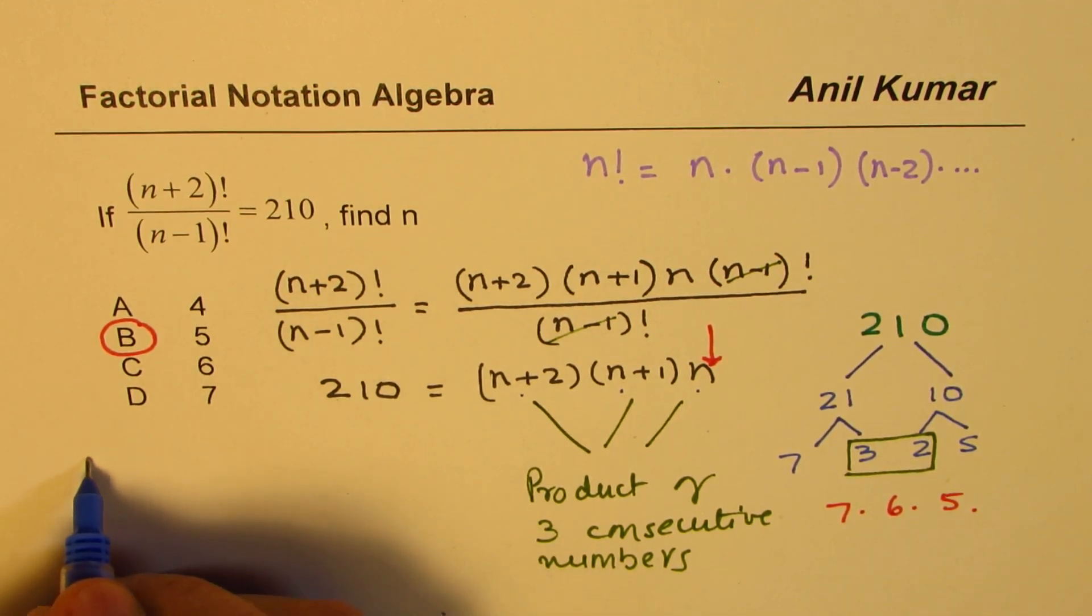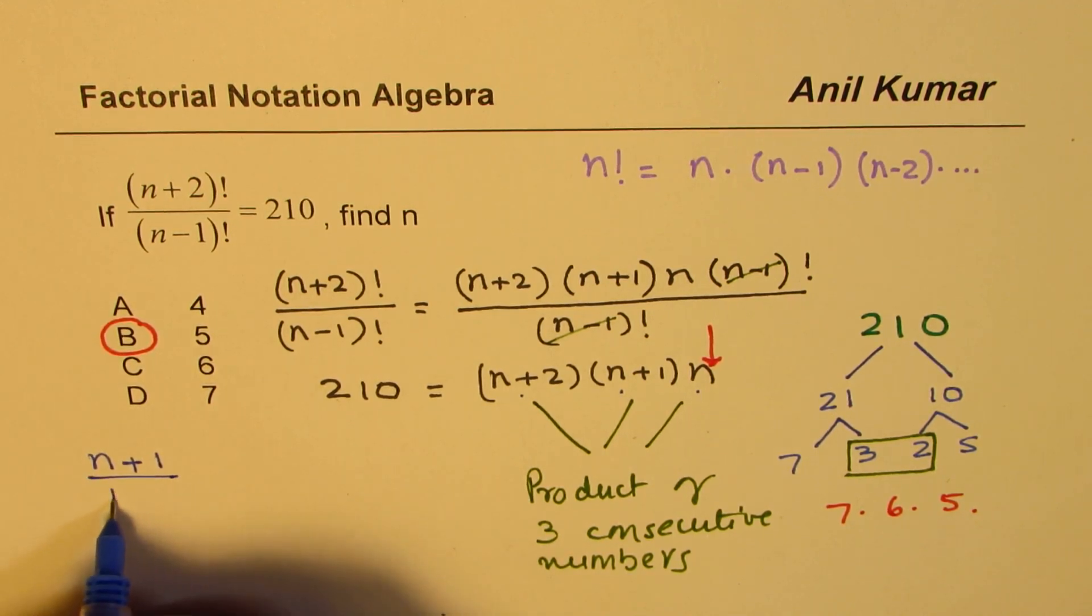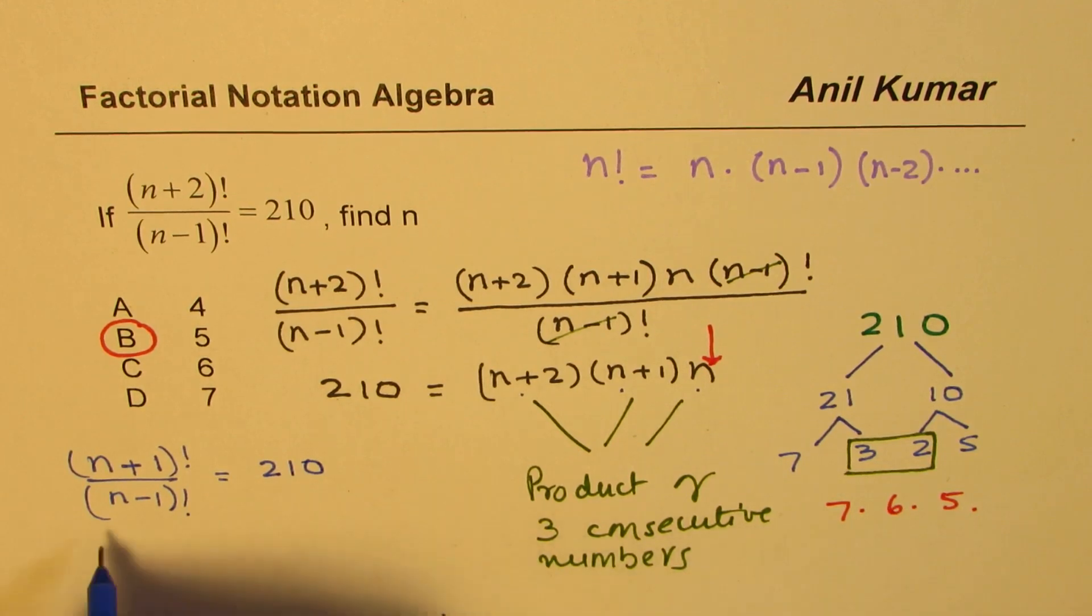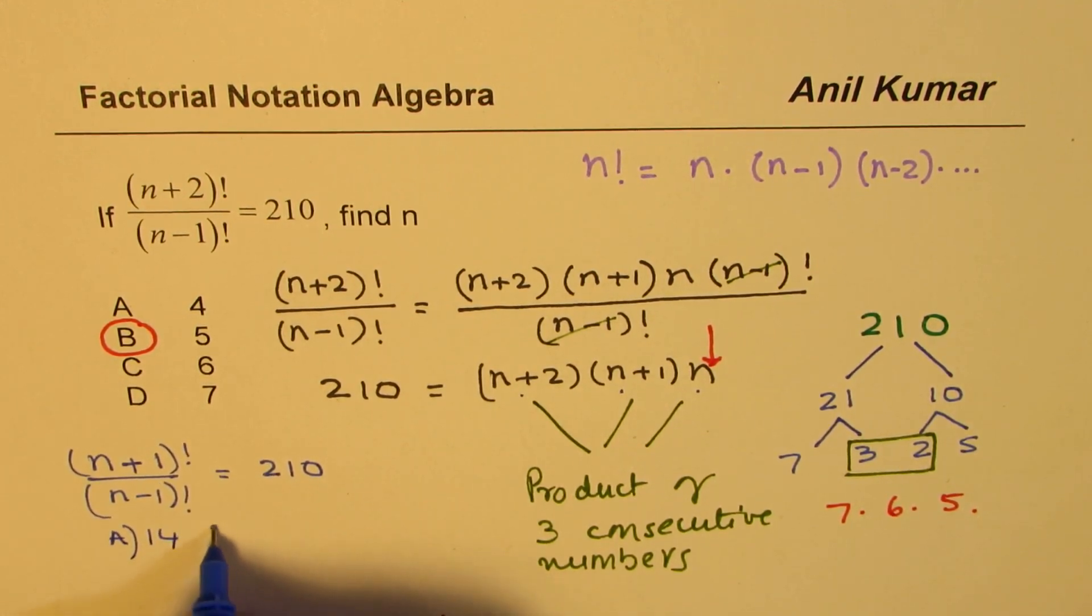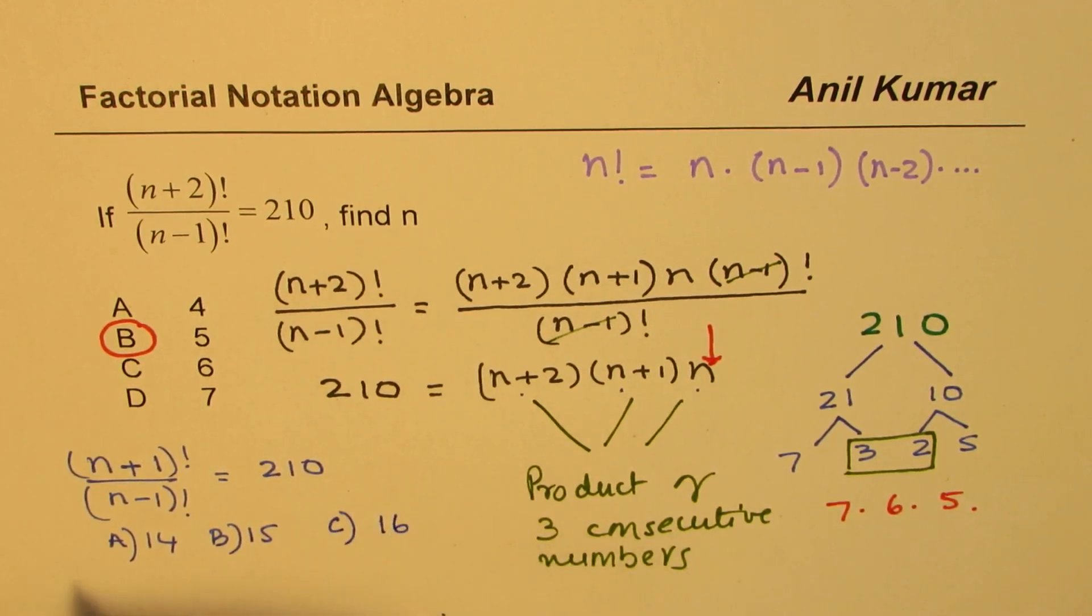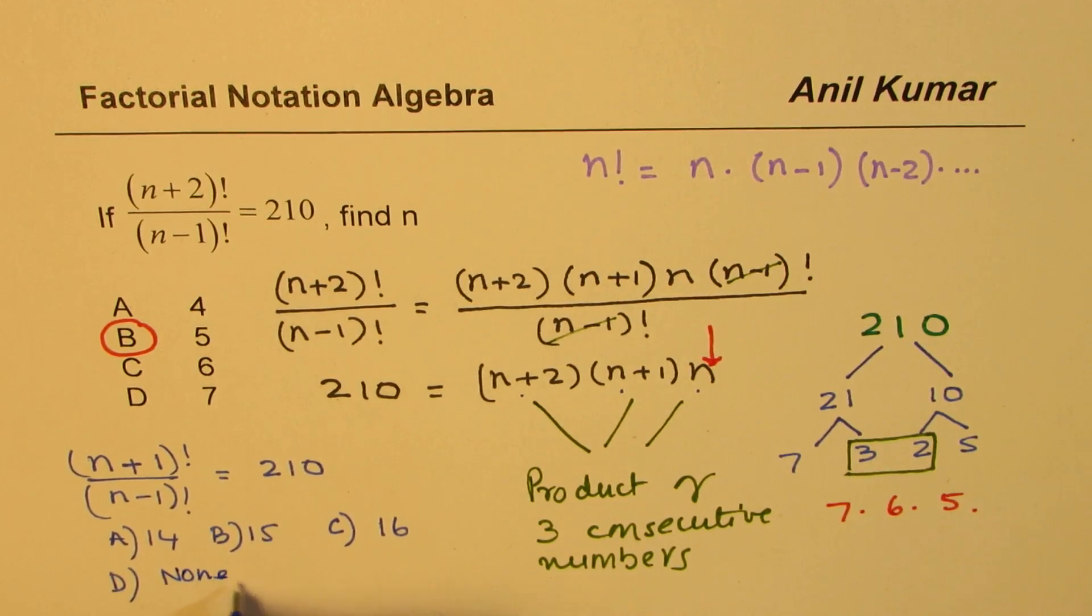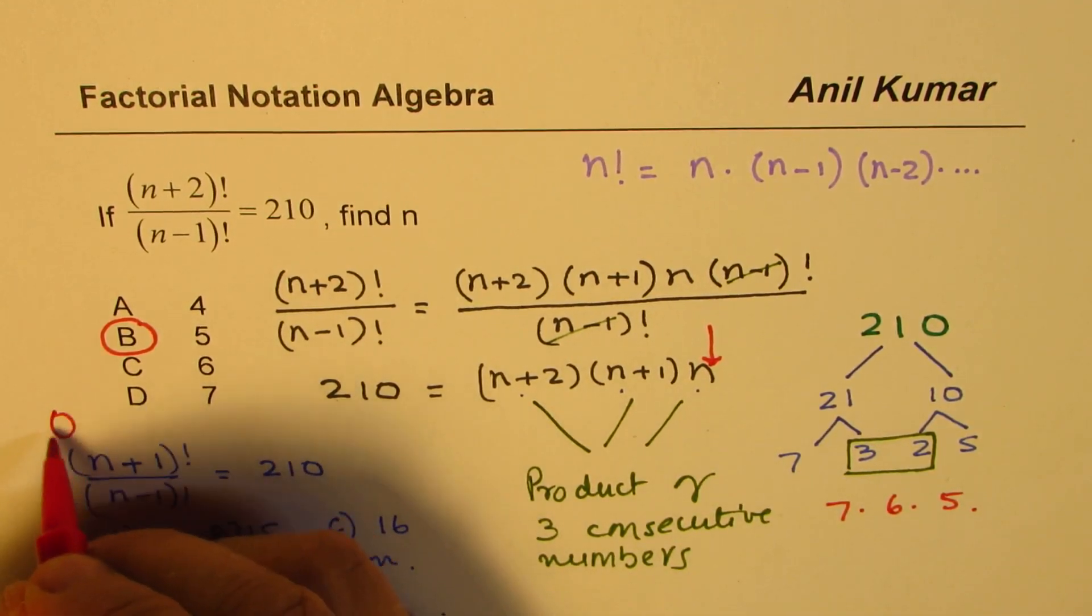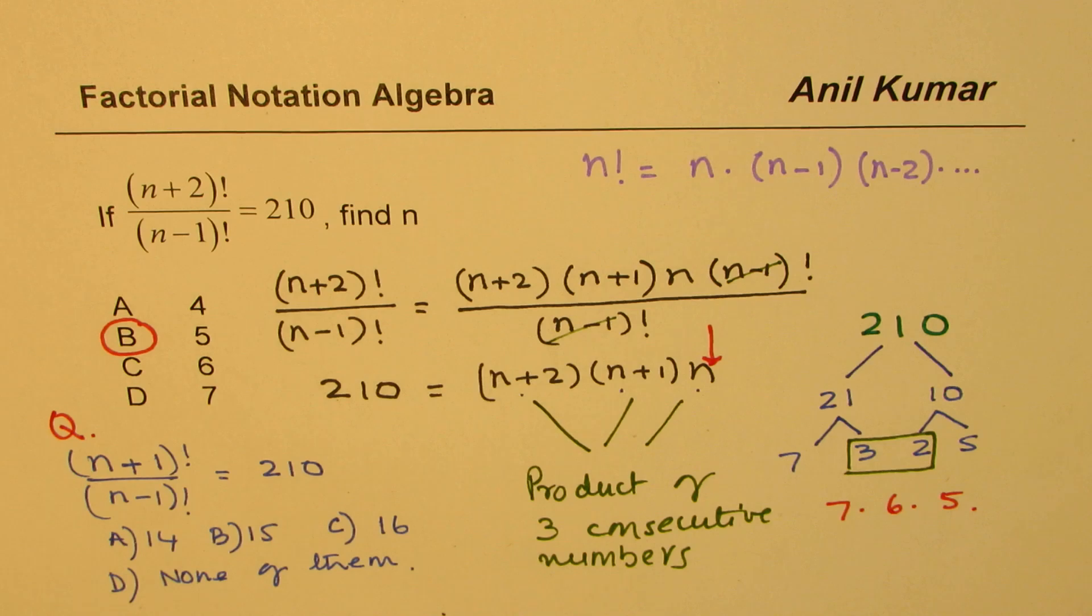Just practice. How will you solve this question? Instead of this, if I give you (n+1)! over (n-1)!, both factorials, equal to 210. And let's say the choices are 14, 15, 16, and D is none of them. That is a question for you to work on. I hope you got the method. Try this out. Thanks for watching and all the best.